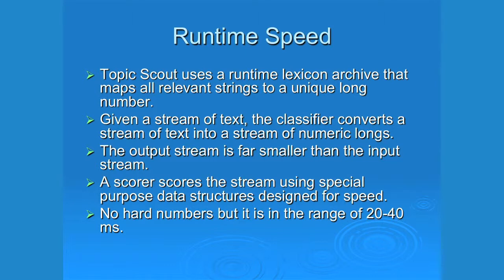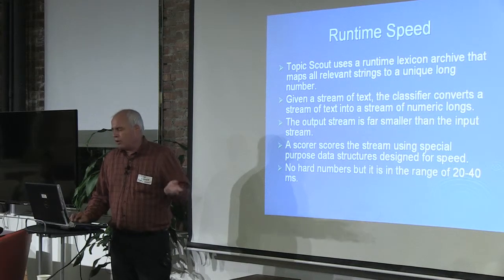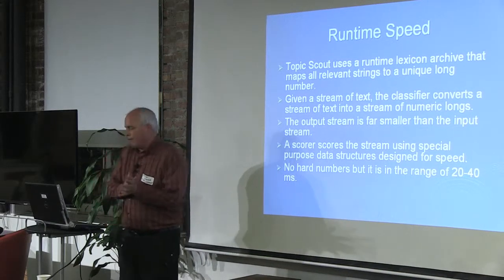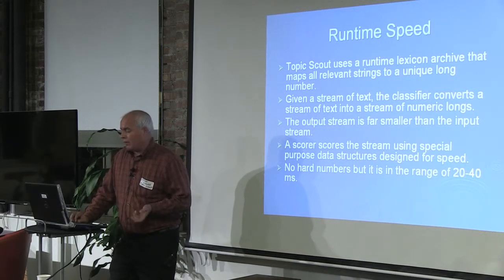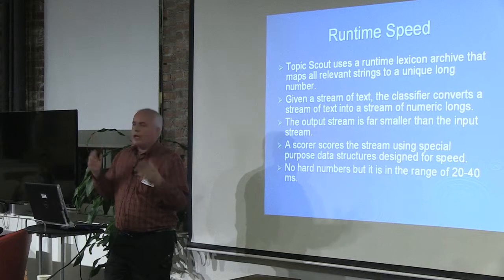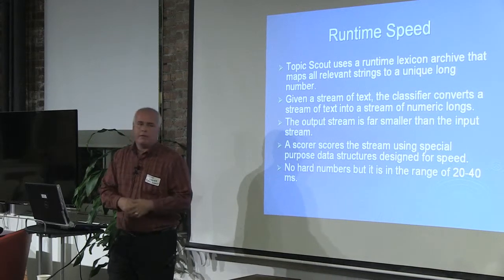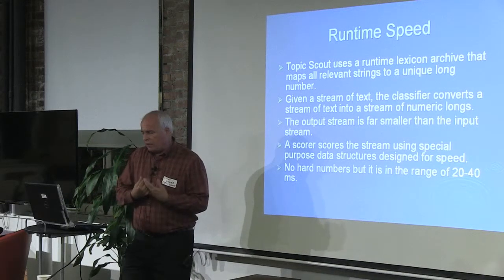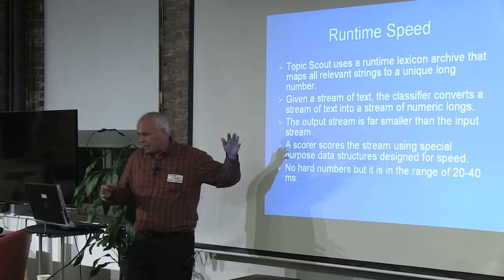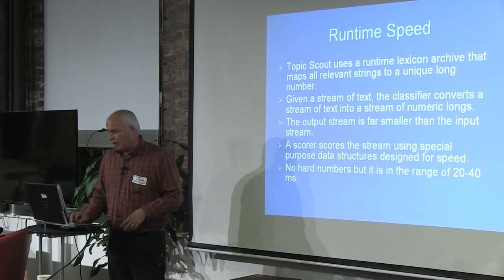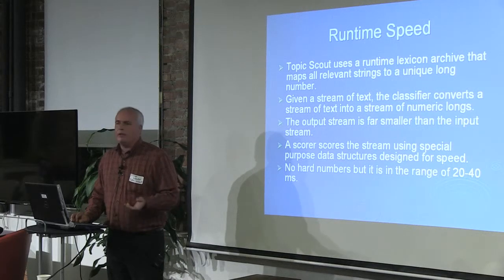Based on that bias, I take the raw precision, apply a correction, and that's how I get the precision numbers. In terms of runtime speed, the data mining and learning happen in slower background processes, but eventually they can go near real-time. For classification at runtime, when you have that many topics you can have performance problems. TopicScout converts all the lexicons — whether it's 5,000 or 10,000 — into long numbers, so there are no strings at runtime. A document is converted into a string of longs, and scoring deals with very simple data. It runs at about 20 to 40 milliseconds per classification.